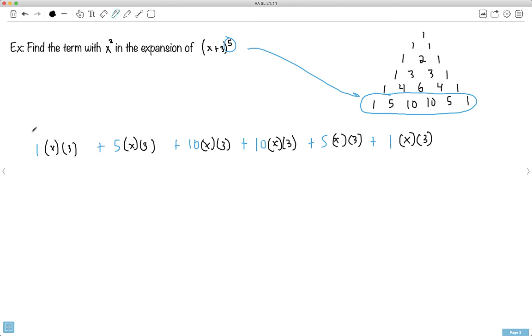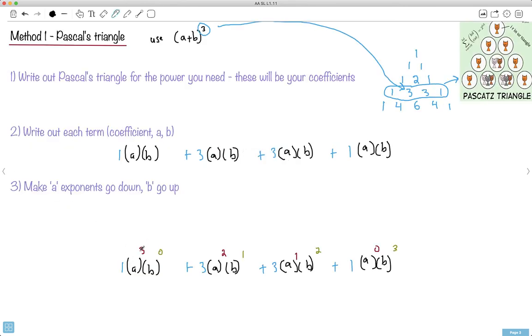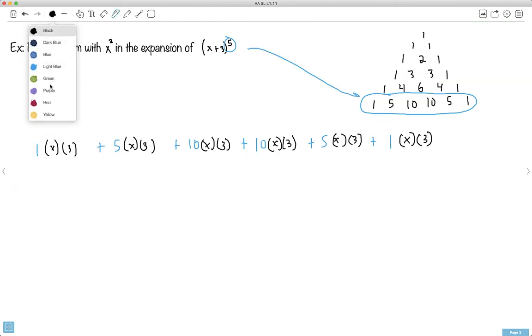Then I make my exponents. Remember, my A exponents go down and my B exponents go up. So this one here, since I started off as power 5, it goes 5, 4, 3, 2, 1, 0. And my B terms go 0, 1, 2, 3, 4, and 5.